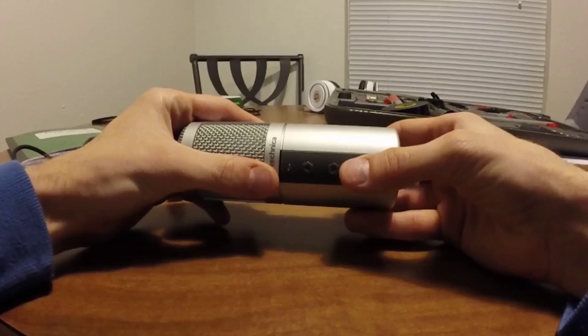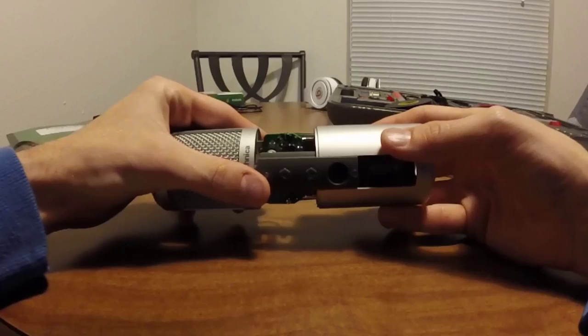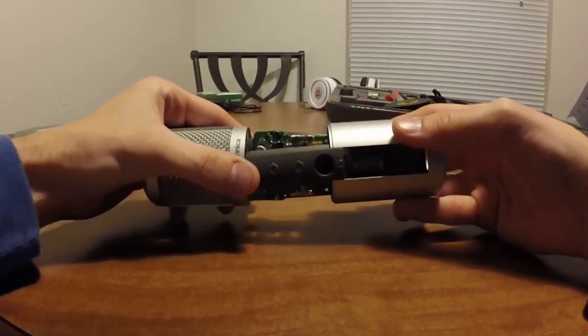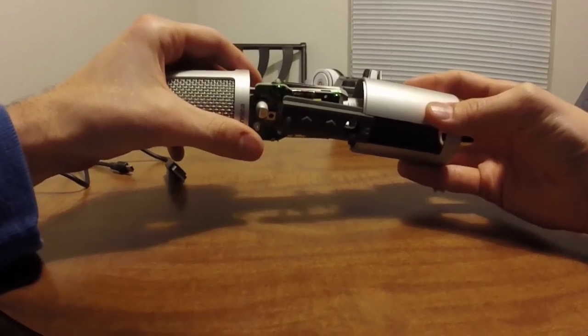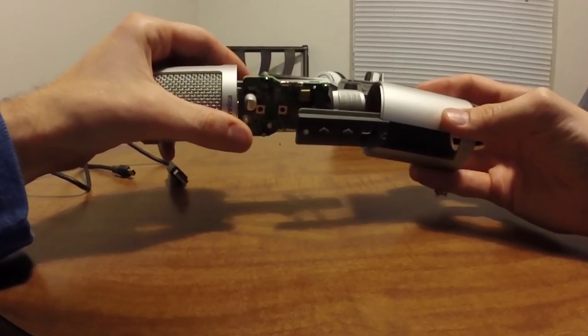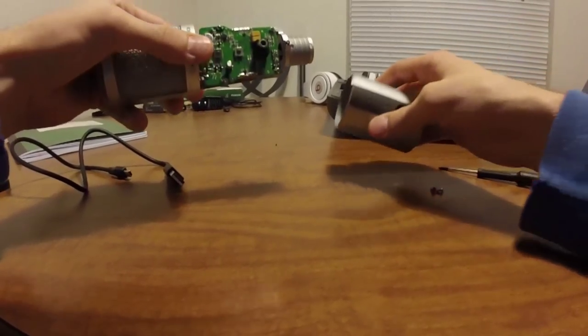Once the two screws are removed, this bottom metal piece just slides right off. Be slightly careful of the plastic piece that has the volume switches on it, but it's easily removable once you get the metal piece most of the way off. So right now you're exposing